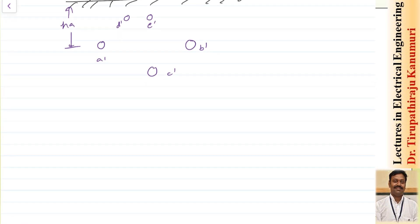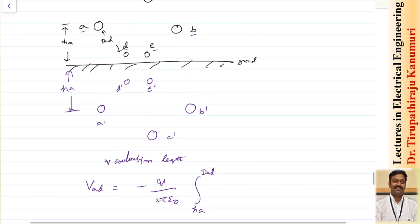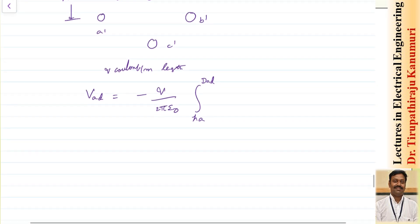I am assuming each conductor is having a charge of Q Coulombs per meter length. The potential induced in conductor D due to conductor A — represented as V_AD — is equal to minus Q divided by 2π ε₀ into integration from H_A to D_AD, where D_AD is the distance between conductor A and conductor D.